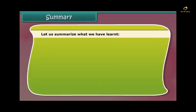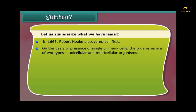Let us summarize what we have learned: In 1665, Robert Hooke discovered cell first. On the basis of presence of single or many cells, the organisms are of two types: unicellular and multicellular organisms.